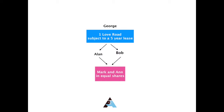For the purposes of this video we will be dealing with a scenario of a freehold land subject to a five-year lease, which Alan and Bob, the executors of the late George's estate, have instructed their conveyancer to transfer to Mark and Anne, the beneficiaries, who will hold the property as tenants in common in equal shares.